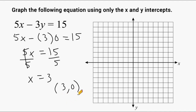On the coordinate plane, the x-intercept of (3, 0) would be located 3 to the right of zero, and we would not go up or down. It would be located exactly at this location right here.